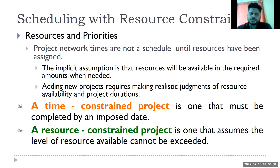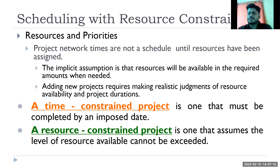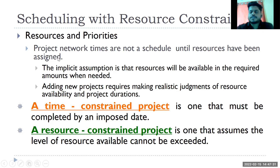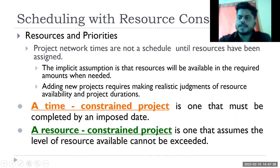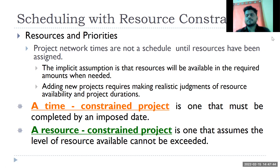There are two types of constrained projects. A time-constrained project has a fixed end date imposed by the client — the product launch or website go-live is fixed and must be completed within that time. A resource-constrained project is when you don't have the required resources to complete the project. This line is very important: project network times are not scheduled until resources have been assigned.